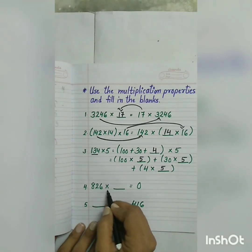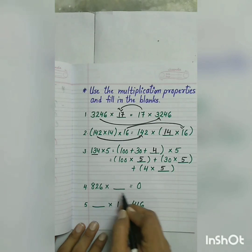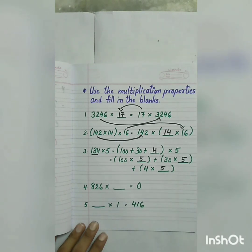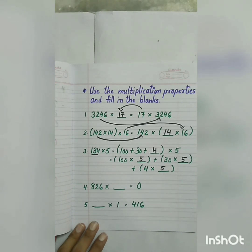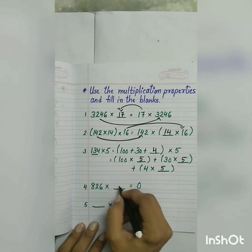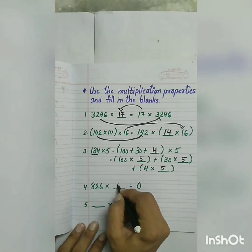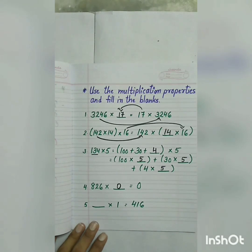Fourth: 826 multiplied by blank is equal to 0. The product is 0. If we multiply any number by 0, the product is always 0, so the missing number is 0. Which property is this? Zero property.